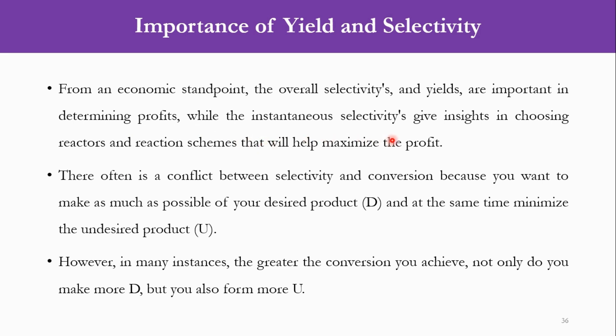However, once we talk about selectivity, there is always a conflict between selectivity and conversion, because obviously you want to maximize the desired product, but you want to at the same time minimize the undesired product. While the conversion does not take into account the desired or undesired. So more will be the conversion, we say more efficient will be the system. But in that system, we also want that our desired product is more. Obviously, you have more conversion, but at the same time, you want to have maximum selectivity so that your desired product is maximum. So in many instances, the greater the conversion you achieve, not only do you make more D, but you also make more U. Accordingly, you have to install a separation system to separate these two in the system.